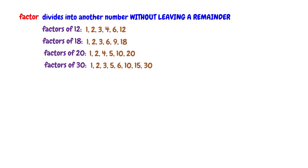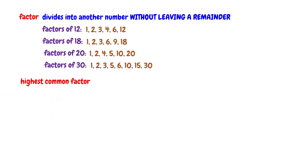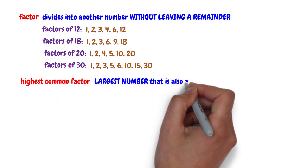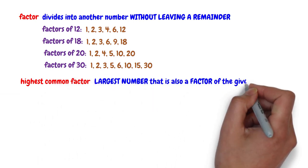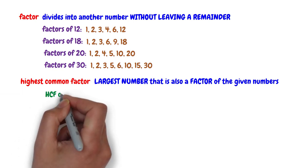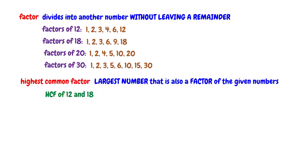So, what is the highest common factor? The highest common factor is the largest number that is also a factor of the given numbers. For instance, what is the highest common factor of 12 and 18? In other words, what's the largest number that is also a factor of 12 and 18?